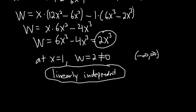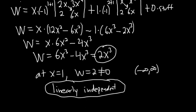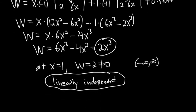So the answer is yes, linearly independent. To summarize: if you have a non-zero Wronskian at even one point on an interval, it's linearly independent. However, if the Wronskian equals zero on the entire interval and the functions are solutions to the same linear differential equation, then it's dependent. Non-zero Wronskian means independent; zero Wronskian — you have to be careful.